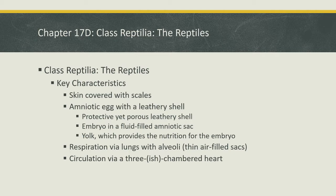Next, we have an amniotic egg with a leathery shell. The main structures of an amniotic egg: first, there is the protective yet porous leathery shell, which serves as a good way of protecting the developing embryo inside, but it's also porous so it allows gases to exchange in and out. Then we have an embryo in a fluid-filled amniotic sac — amniotic fluid inside the sac — and the boundary of that sac is called the amnion. That's where we get the term 'amniotic egg.'